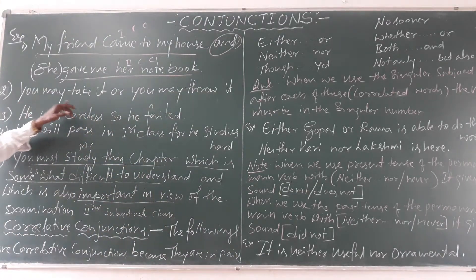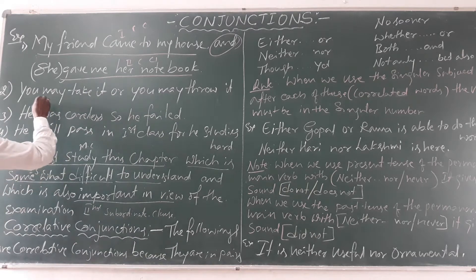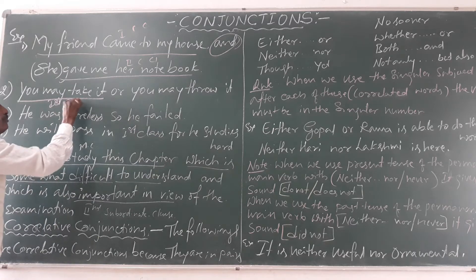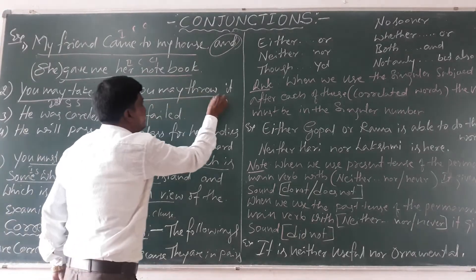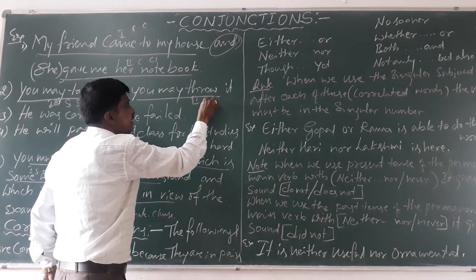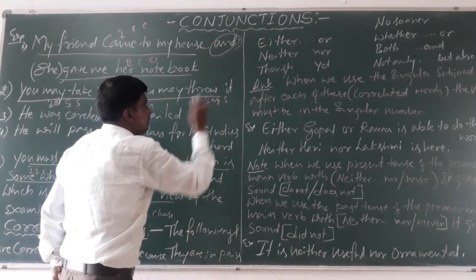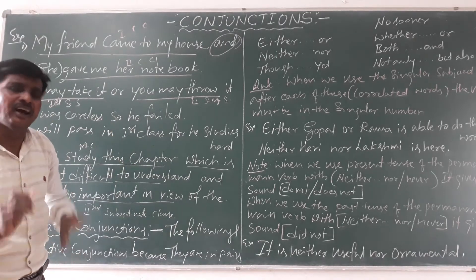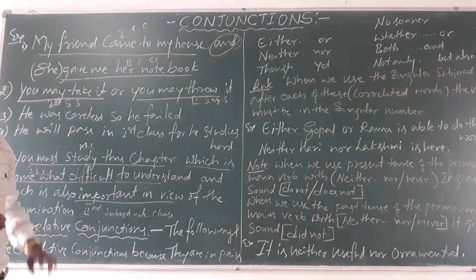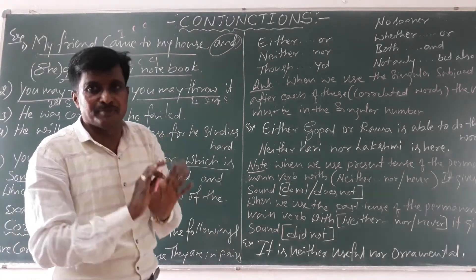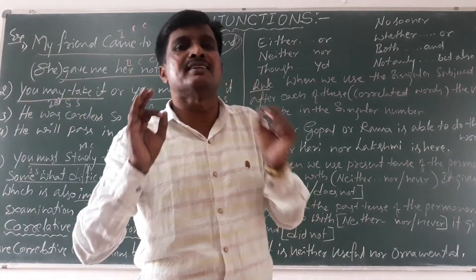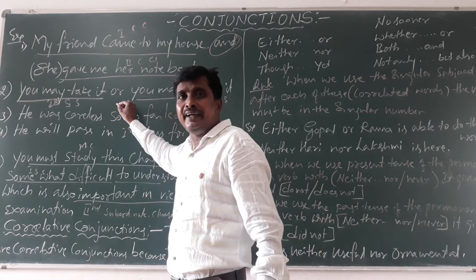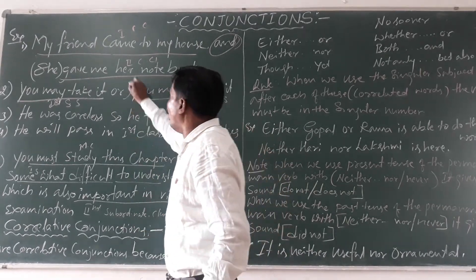Let us see another example. 'You may take it or you may throw it.' 'You may take it' is the first simple sentence, and 'you may throw it' is the second simple sentence. These two simple sentences are joined together by the coordinate conjunction 'or'.